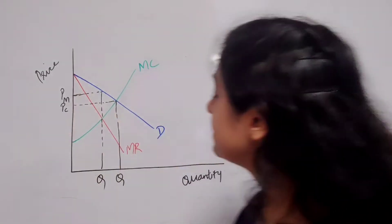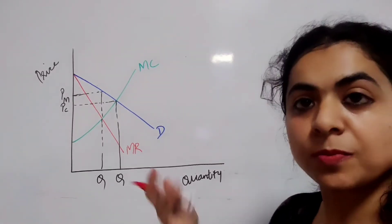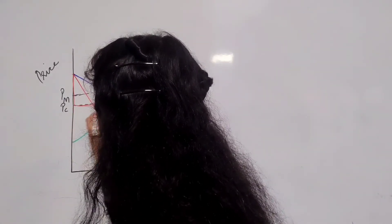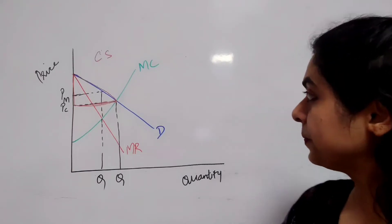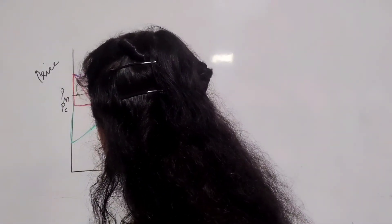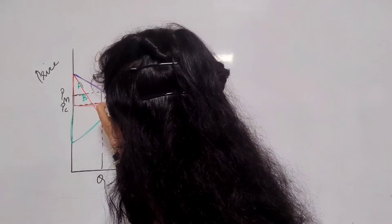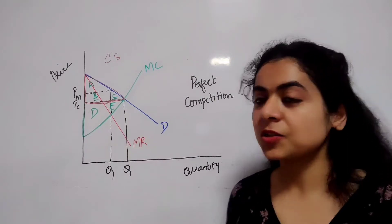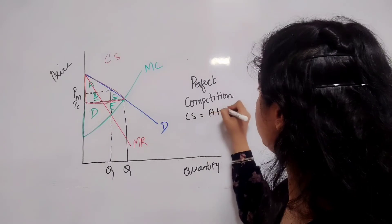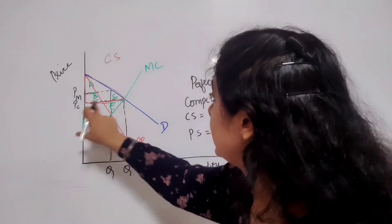Now if I mark the consumer and producer surplus for a competitive market — this whole portion above this line represents consumer surplus for a competitive market. Similarly, this whole portion represents producer surplus for a competitive market. Areas A, B, and C represent the total consumer surplus for a perfectly competitive market — consumer surplus is area A plus B plus C. Producer surplus is D plus E, this whole portion.